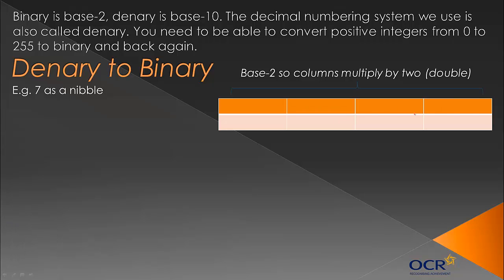I'm using my graphics tablet, so I apologise for the poor handwriting. We start with 1 — all numbering systems start with 1. In Denary you go 1, 10, 100, 1000. In base 2, we multiply by 2 each time. So we go 2 to the power 1, 2 to the power 2 which is 4, and 2 to the power 3 which is 8. In effect, in binary we're multiplying by 2 each time.